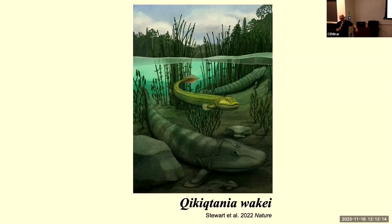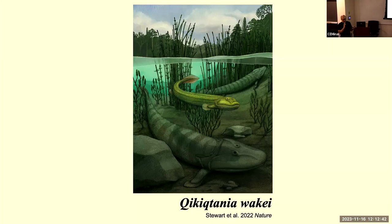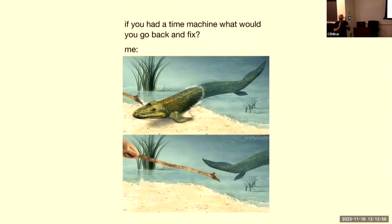Last year we also described a new elpistostegalian — a very close relative of Tiktaalik — that's notable because it's smaller and has a very differently organized fin and humerus, suggesting it was more adapted for swimming than pushing off the ground. This shows a degree of ecological breadth we didn't anticipate in these animals — a secondary emergence back up from the bottom into open water, something you see in amphibians and frogs all the time. These animals were not just unidirectionally marching onto land; there's a whole breadth of variation we're only now starting to grasp.